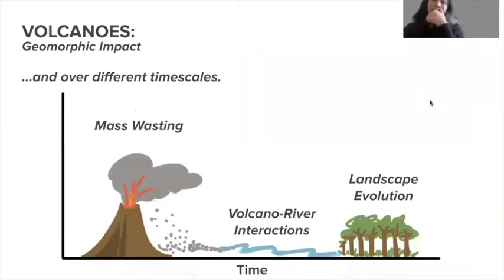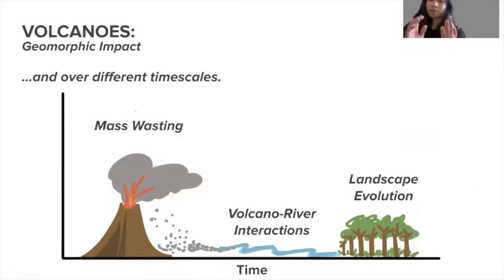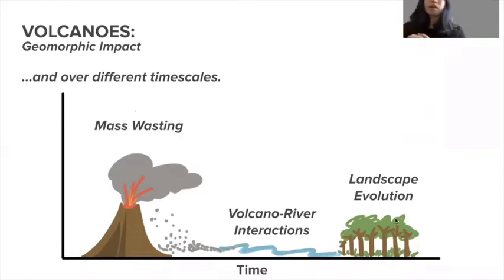We're going to break this down into three timescales. We're going to look at the more immediate timescale, short to mid-term, talking about mass-wasting events and volcano-river interactions. And then we'll wrap it up with longer timescales looking at evolution of landscapes, considering biology and erosion.